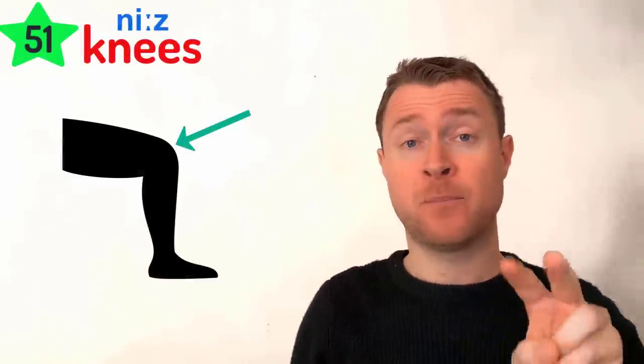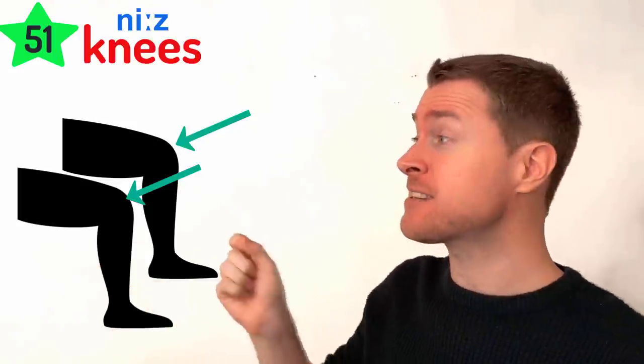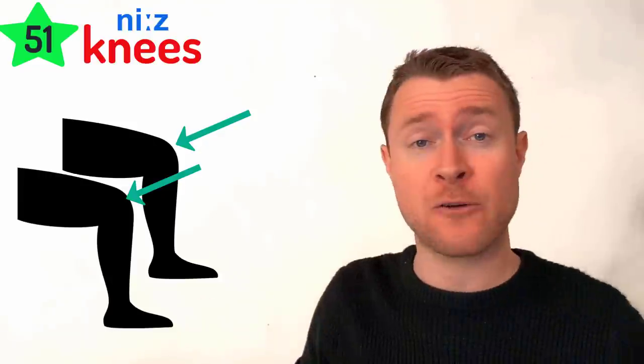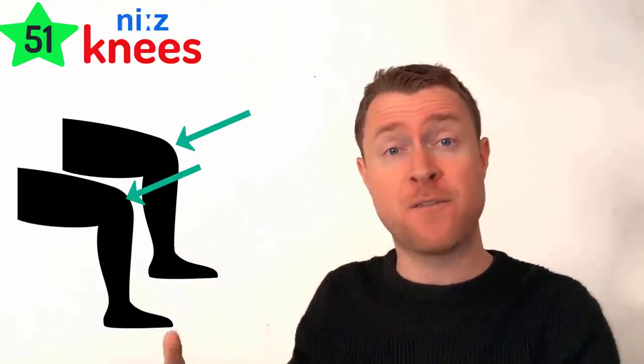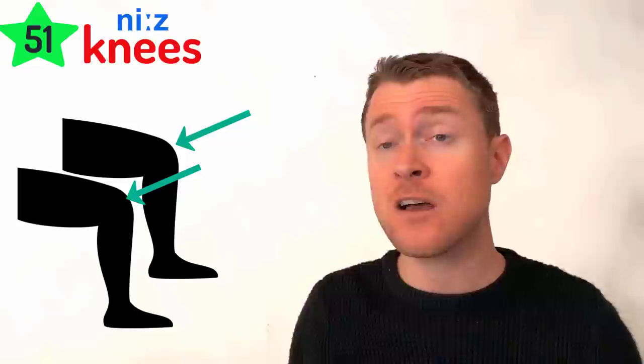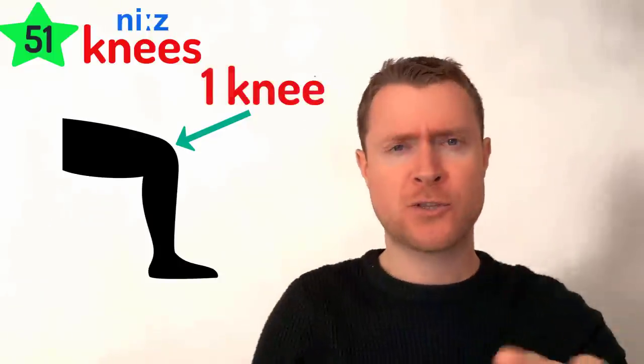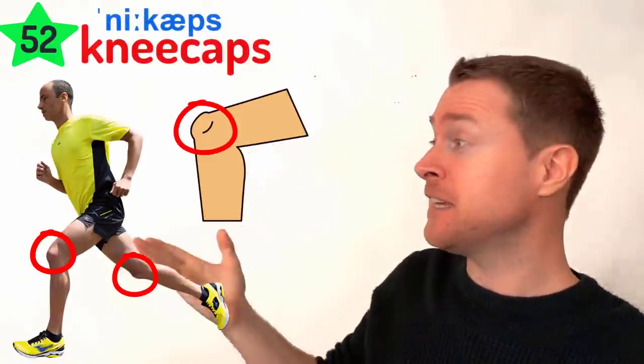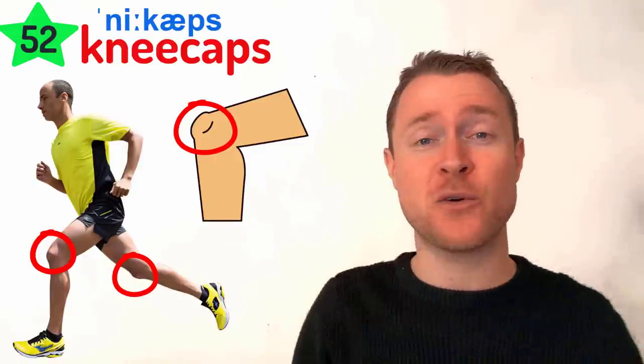Below your thighs is, of course, your knees. One knee, two knees. Remember this one because it's got a silent K — when K comes before N in English, it's always silent. We say 'knee,' not 'k-knee.' On the top of your knees is your kneecap — just like wearing a cap on your head, we have a cap on our knees. That little bone on the front is your kneecap. You have two — kneecaps.